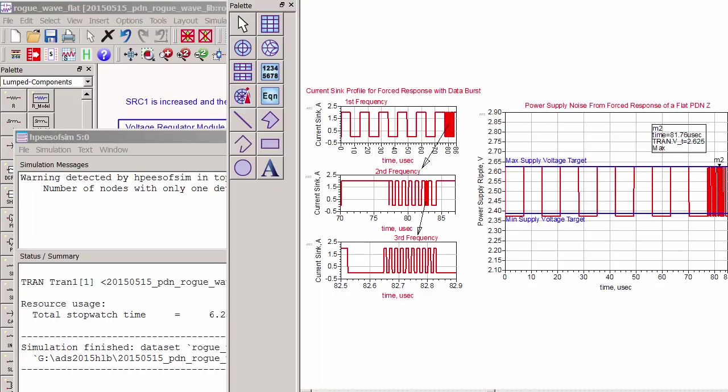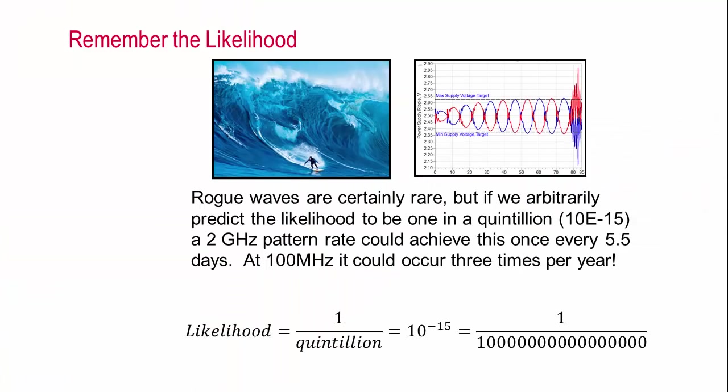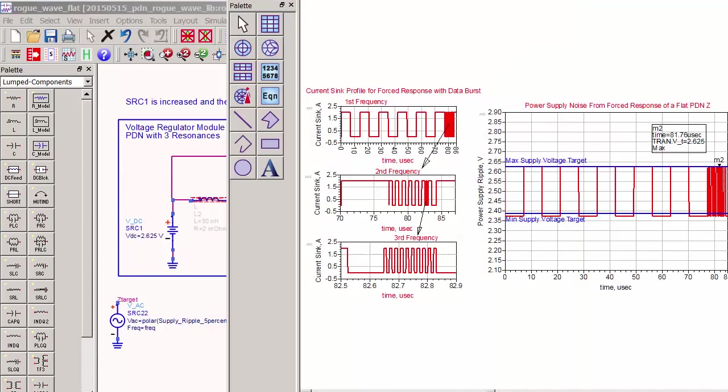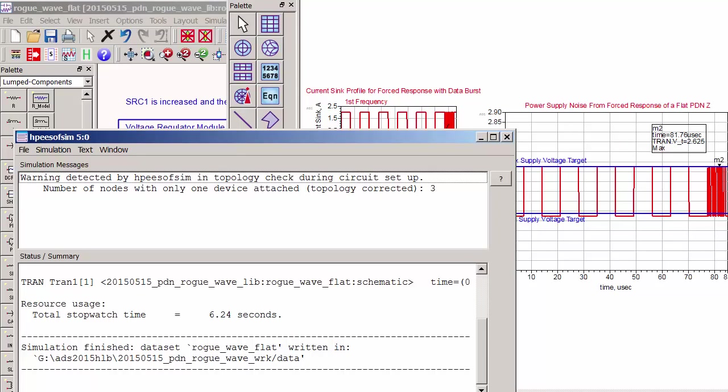While rogue waves may seem unlikely, consider this. Arbitrarily setting the likelihood of a rogue wave to be 1 in a quintillion, a 2 GHz pattern could achieve a rogue wave every 5.5 days. Even at 100 MHz, this could occur 3 times per year. In this video, I've shown that rogue waves can exist in power systems and the importance of designing a resonant-free power system.